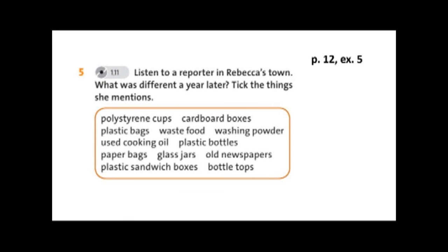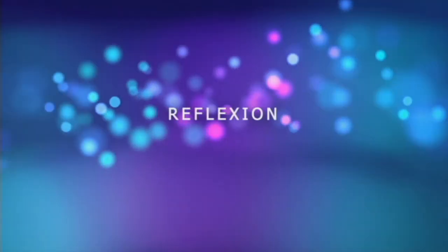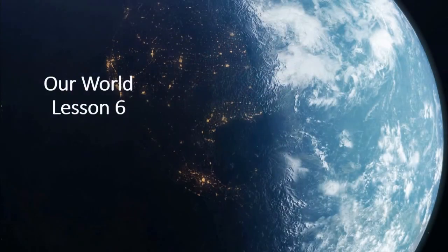As Rebecca Hosking says, bags are only a very small part of the problem. Shopkeepers are replacing plastic packaging with brown paper bags — they're doing this for things like plastic sandwich boxes. Glass bottles are replacing plastic ones. You can buy green washing powder in cardboard boxes now. The main thing is that people are trying to change their habits and they're talking about it.